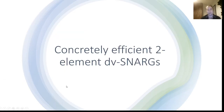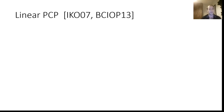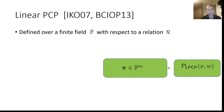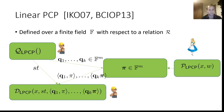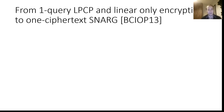Now let's dive deeper into how we obtain these constructions, starting with the concretely efficient two-element designated verifier SNARK. Our first point is linear PCP, introduced by Shaye et al. and later developed by Bitansky et al. Linear PCPs are defined over field F with respect to a relation R. The prover generates a proof π over field F, and the query algorithm asks k queries q1 through qk over the field, generating a secret state ST. The decision procedure gets the specific instance, the secret state ST, and the result of all inner products of the queries with the proof, then outputs accept or reject, with completeness and soundness required in the usual manner.